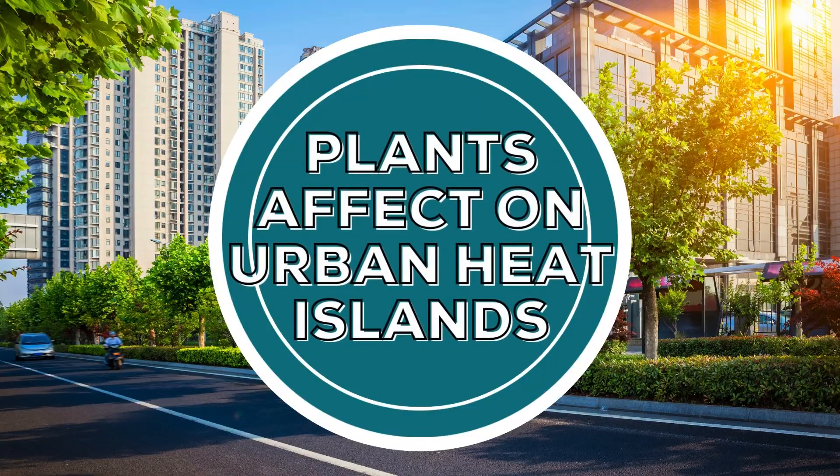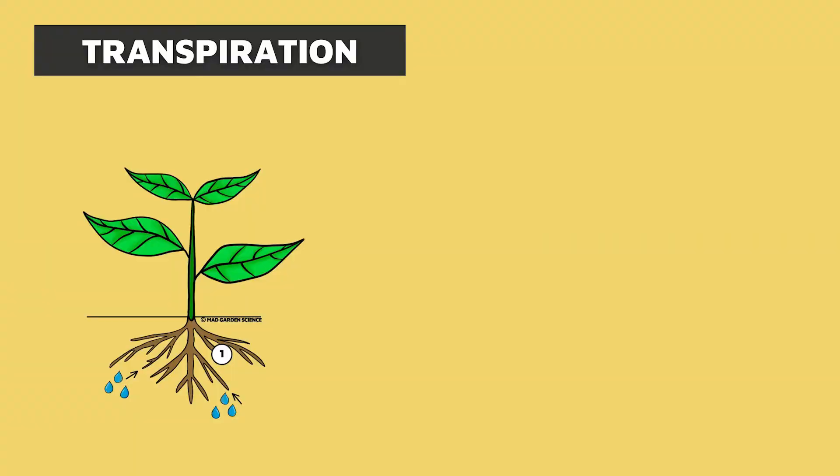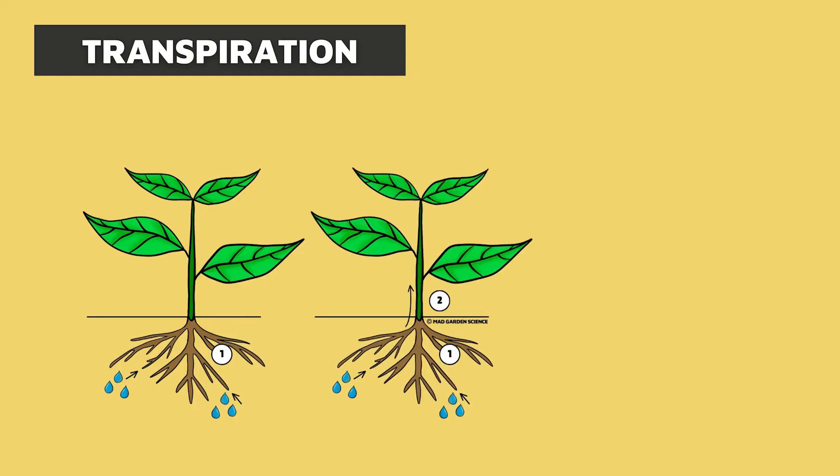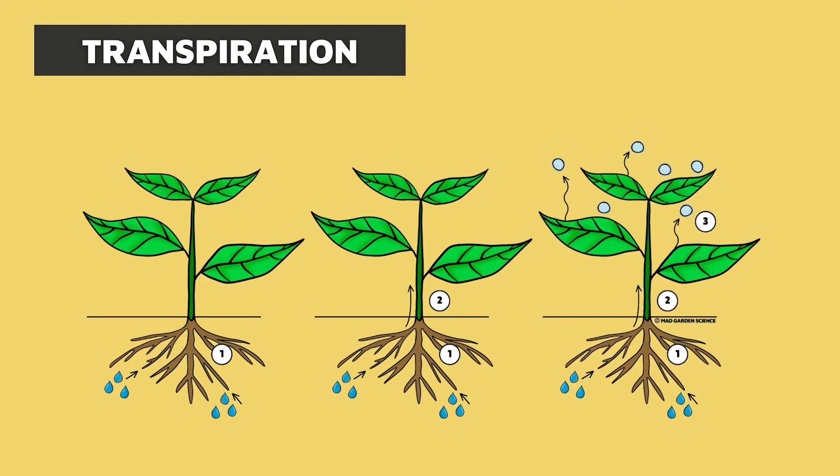One obvious way that plants help to reduce the temperature of a surface is through the shade they provide. Shade is great, but it's not the only way that plants help to cool off the surrounding air. Through a process called transpiration, water and nutrients are taken up by the plant roots from the soil and delivered to the stem and leaves as part of photosynthesis. Some of the water drawn up through the roots exits the plant through pores or stomata in its leaves.